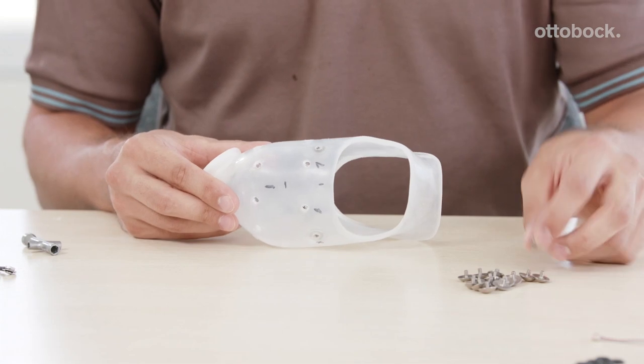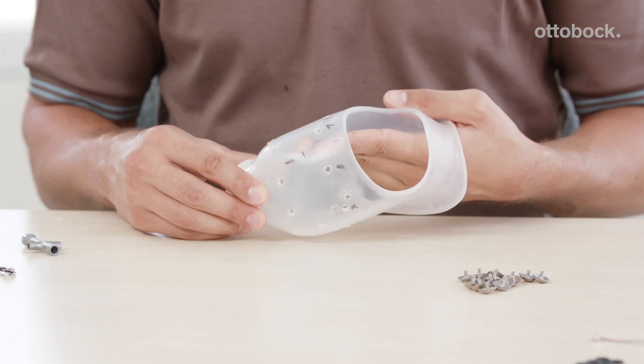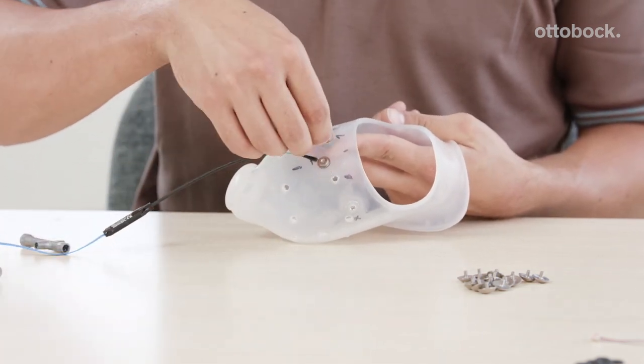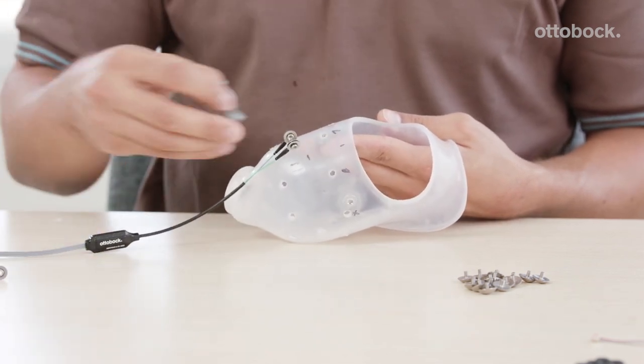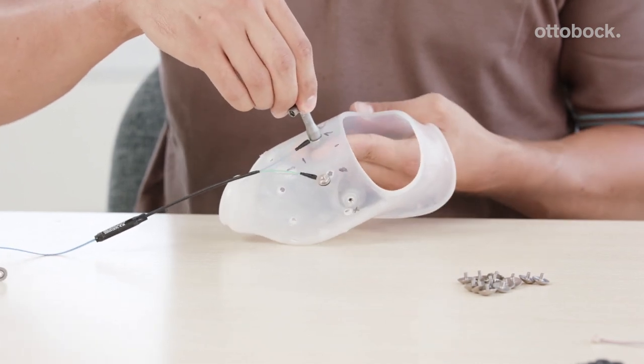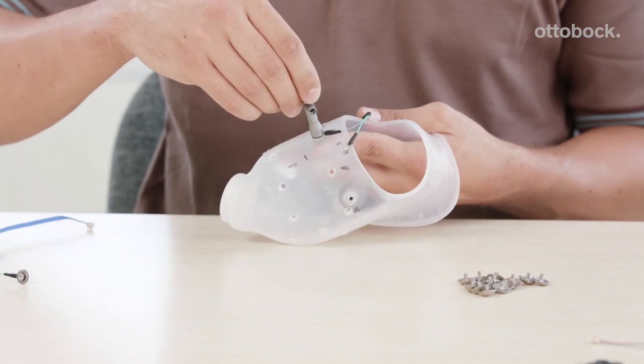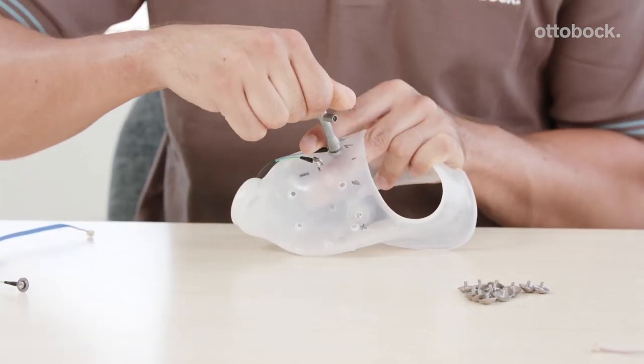Mount the electrodes by screwing electrode domes and electrode nuts together. Insert the electrode dome from the inside and the electrode nut from the outside into the prepared hole. Different electrode dome heights can be combined if needed. Screw both parts together using the 7mm Allen key. Hand tighten the screws.